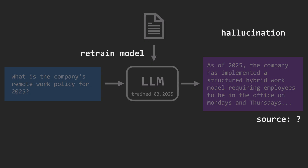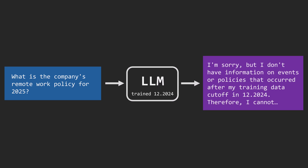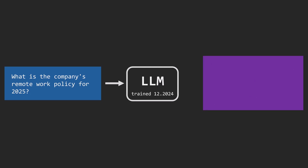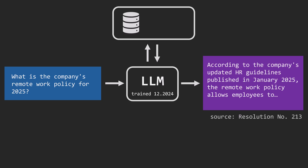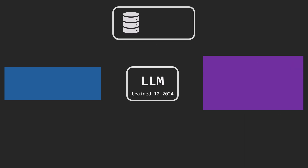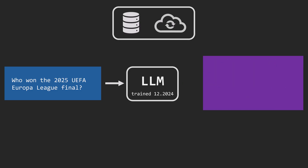In this video, I will show you how it's possible to address these issues. What if instead of directly answering a question about a recent event, a model could first look it up in an external database, analyze it, and then generate a response with sources? Or even look it up on the internet, and then generate a response with sources.